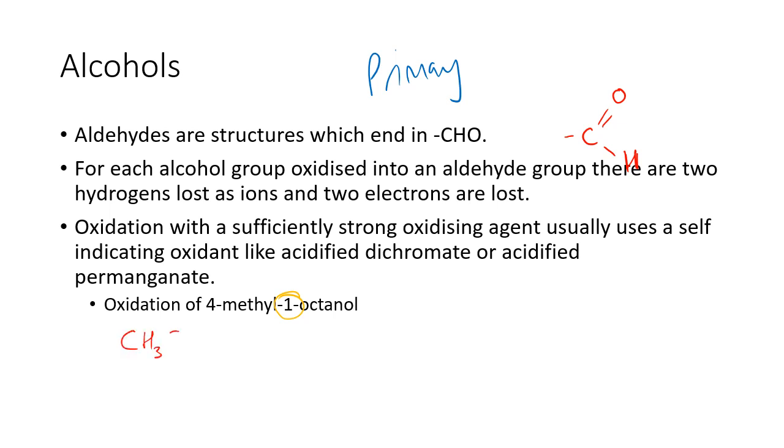Let's just write this out. Octanol, 1, 2, 3. Now on the fourth one, there is a side group of the methyl group. 4, 5, 6, 7, and 8. So that's 4-methyl-octanol.